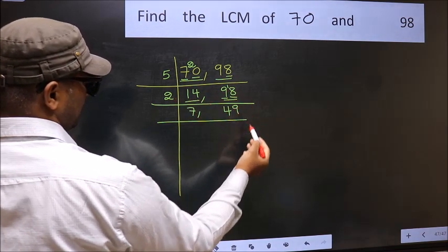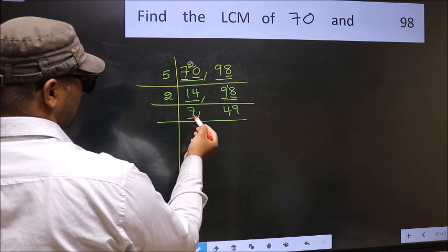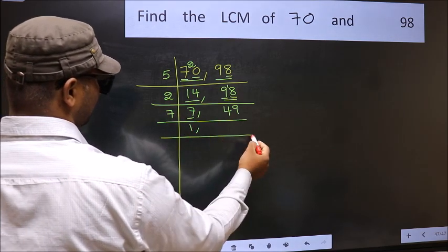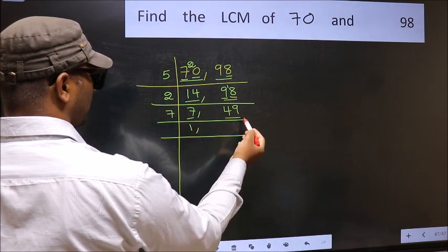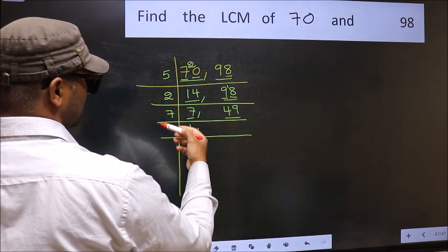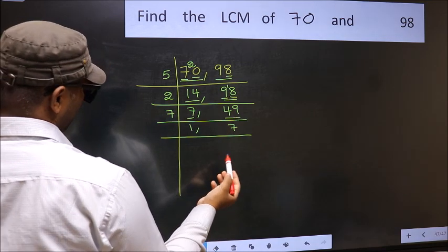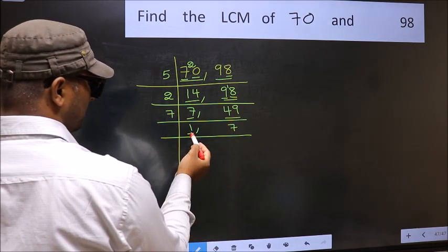Now here we have 7. 7 is a prime number, so 7 once is 7. The other number 49, when do we get 49 in the 7 table? 7 sevens is 49. Now we got 1 here, so focus on the next number.